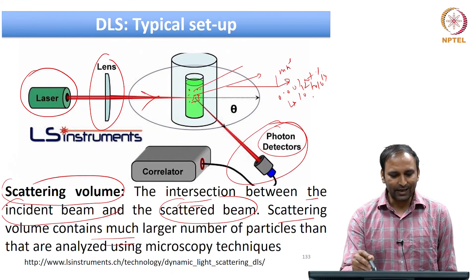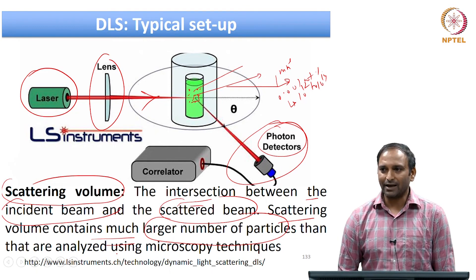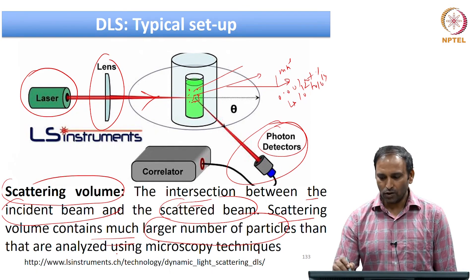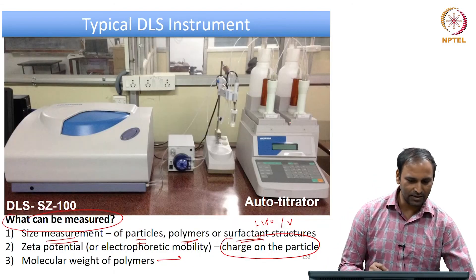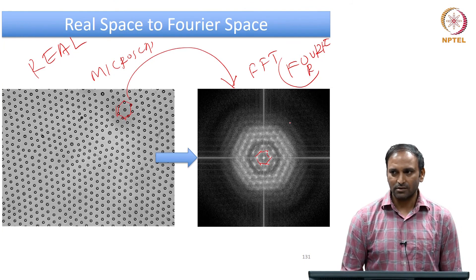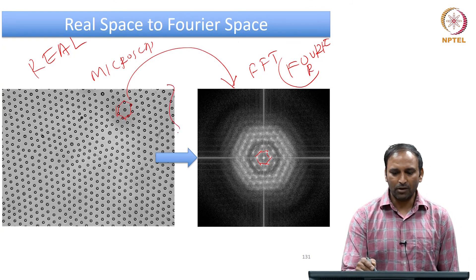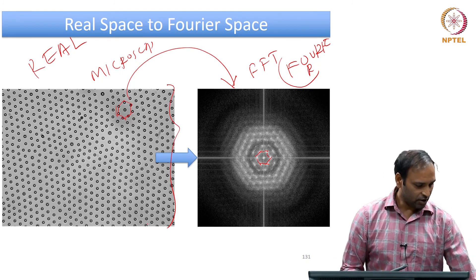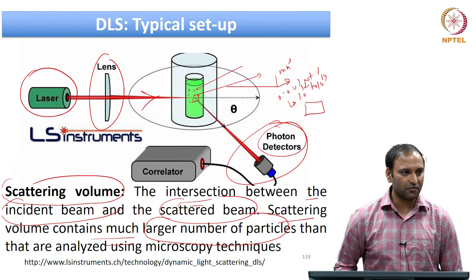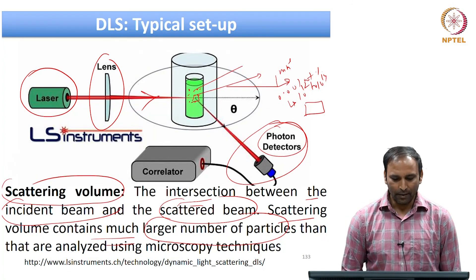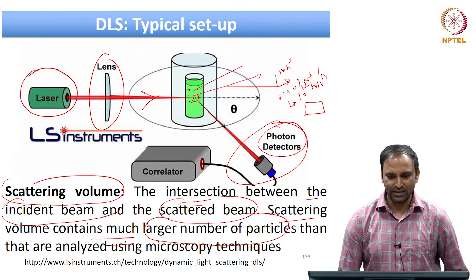Therefore, the scattering volume really contains a large number of particles compared to what can be analyzed by something like microscopy, where you look at only a small section of your sample. For example, if I am going to analyze particle size from a microscopy image, I will be limited to maybe a few hundred particles. However, if you do scattering experiments, the scattering volume will contain essentially a large number of particles, so you get a better average for the particle size when you do DLS experiments.